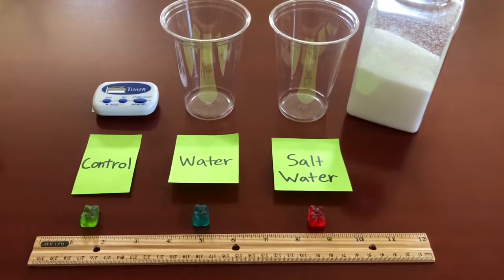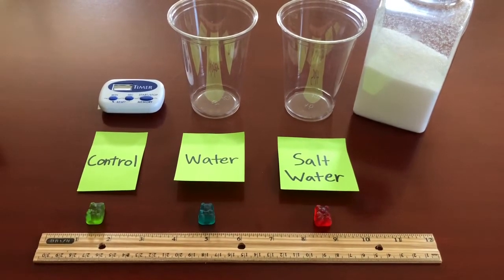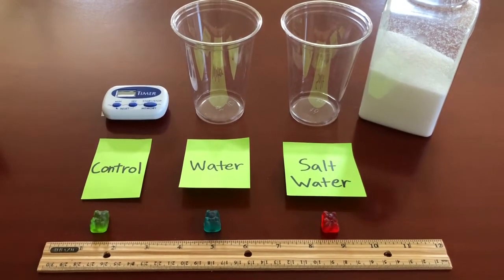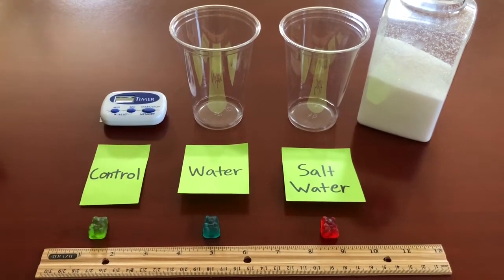For this experiment we are going to need three gummy bears: one to submerge in salt water, one for water, and the other one as a control. We also need two cups, salt, a ruler, and a timer.